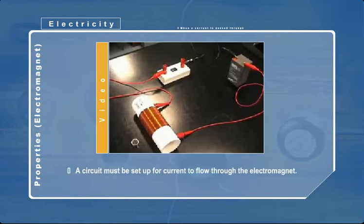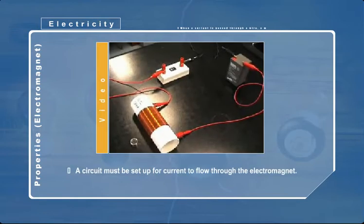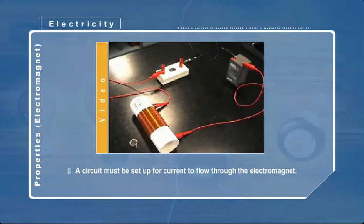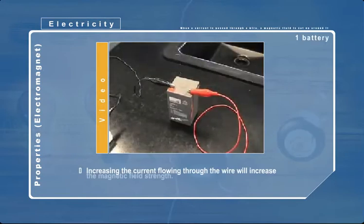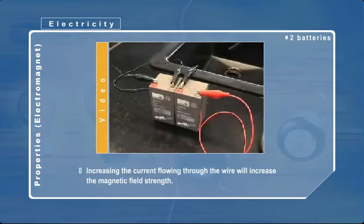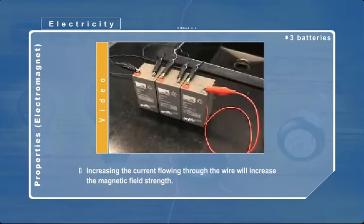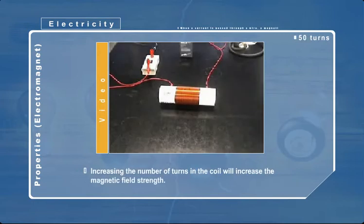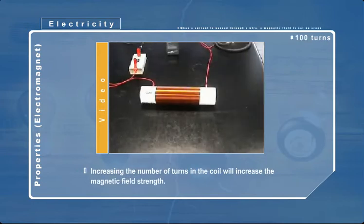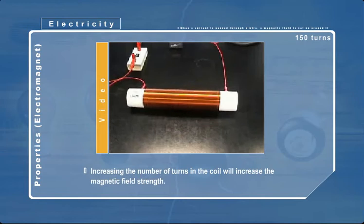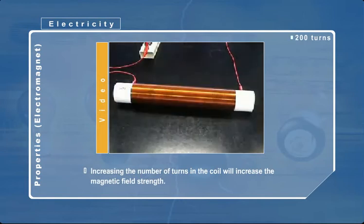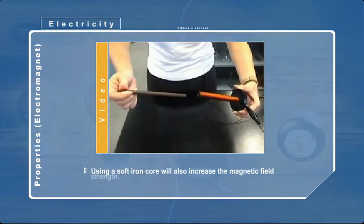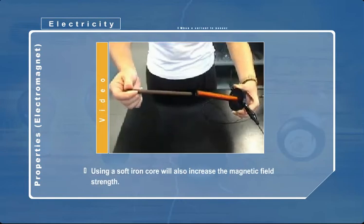The electromagnet only functions when there is a current passing through the wire. The strength of the magnetic field is increased by increasing the amount of current flowing through the wire, by increasing the number of turns in the coil, and by using a soft iron core.